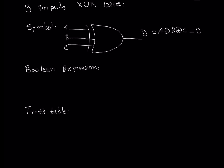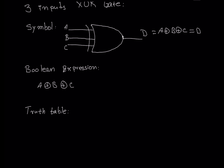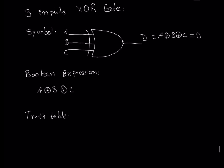The Boolean expression for three inputs is A XOR B XOR C — where the plus surrounded by a circle means XOR. That is the Boolean expression. The logic symbol is the three-input gate we drew: A is XOR'd with B, and then that is XOR'd with C, giving us output D.